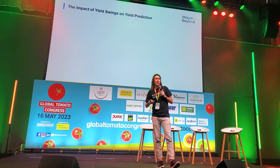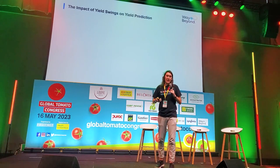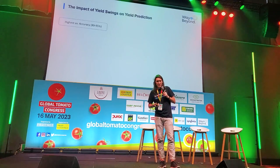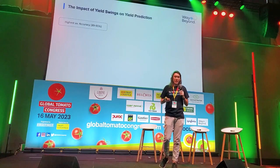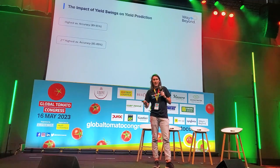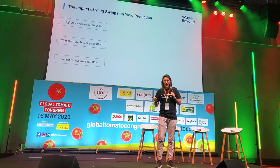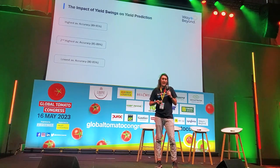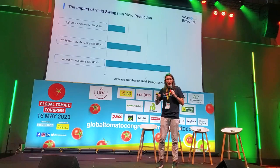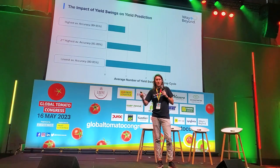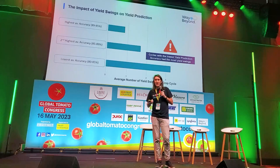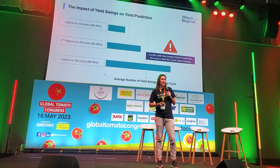So we went through and did yield prediction on 24 crop cycles of tomato data. For each of those crop cycles, we got the accuracy ranges and grouped them into three groups: the highest accuracy group where accuracies ranged from 89 to 95%; the second where they ranged from 85 to 89%; and the lowest accuracy group ranging from 80 to 85%. As we hypothesized, we found that as accuracy decreases, the number of yield swing weeks increases. What that suggests is: the less consistent your growing practices are, the less useful and less accurate your yield prediction is going to be.